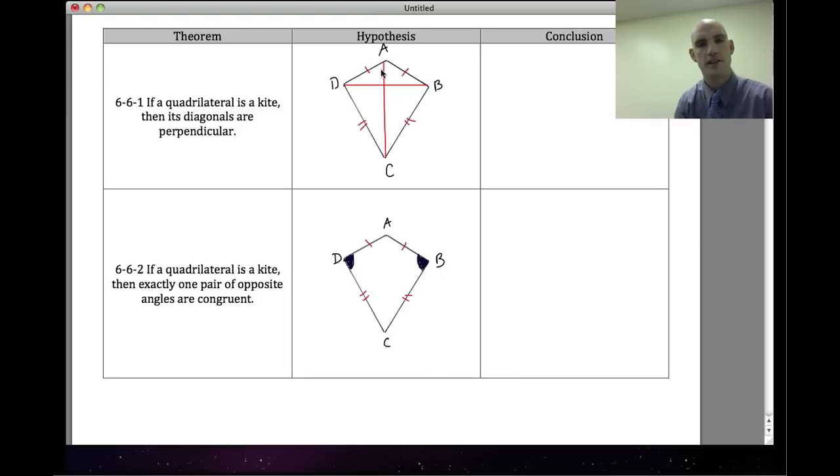When we see a diagram like this and we know that this is a kite because it has two pairs—one pair here, one pair here—of consecutive congruent angles, we can say that AC is perpendicular to DB. That's a conclusion we can make, and so I can go ahead and mark this 90-degree angle here.